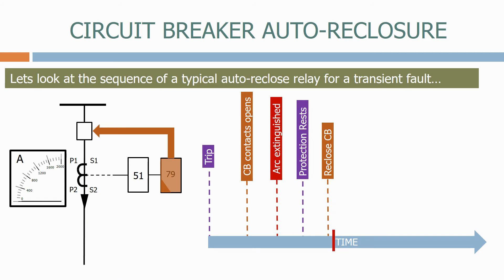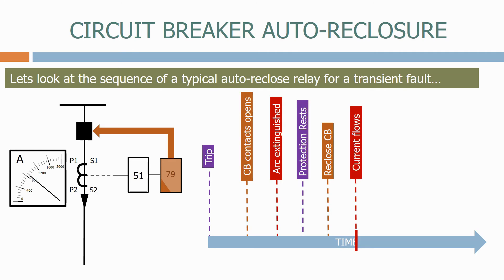We then try and reclose the circuit breaker. Once the circuit breaker is closed, the current starts flowing again. The duration of the time from when the arc was extinguished to when the current starts flowing again is when the circuit was dead. We therefore identify this as the dead time, which is effectively the time from when the circuit breaker contacts open to when they close again. This is a known factor for most circuit breakers and depends on the circuit breaker design and the type of mechanism.